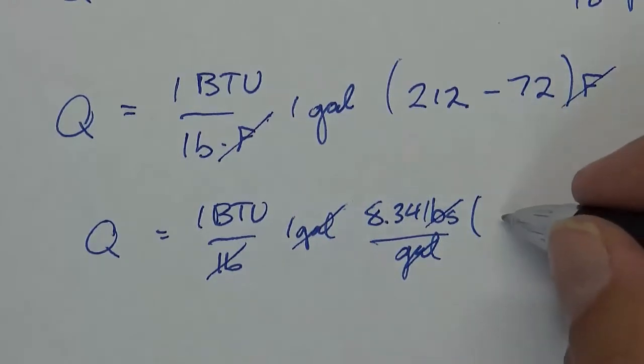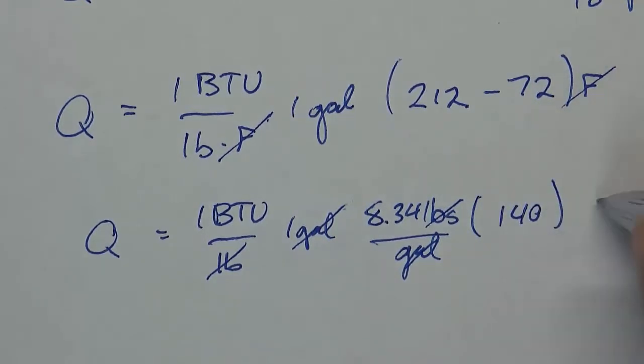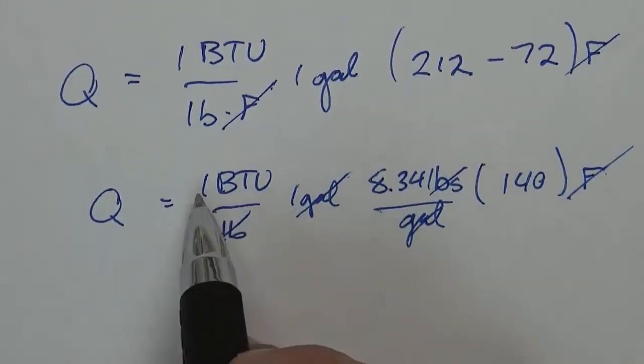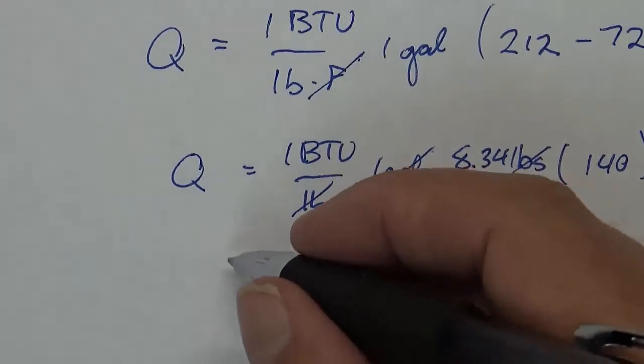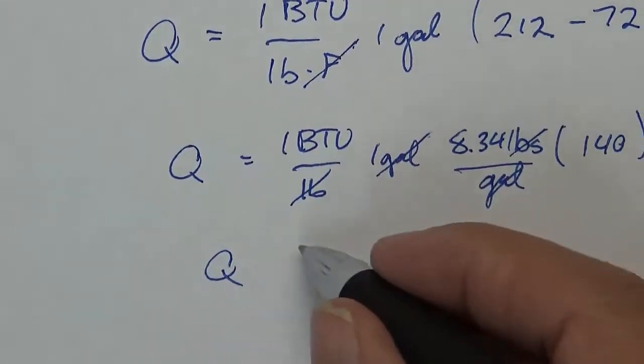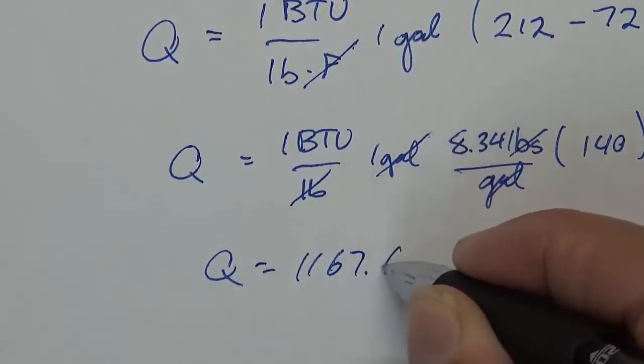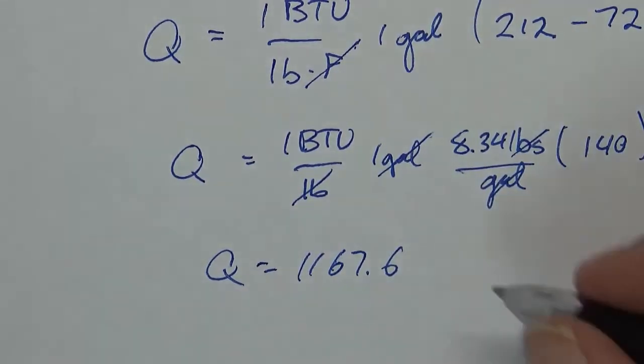I just still got to put in delta T, which is going to be equal to 140 F, and we already got rid of the F. So 1 times 8.34 times 140, that should give us our Q for answer number one, and I get 1167.6 BTU.